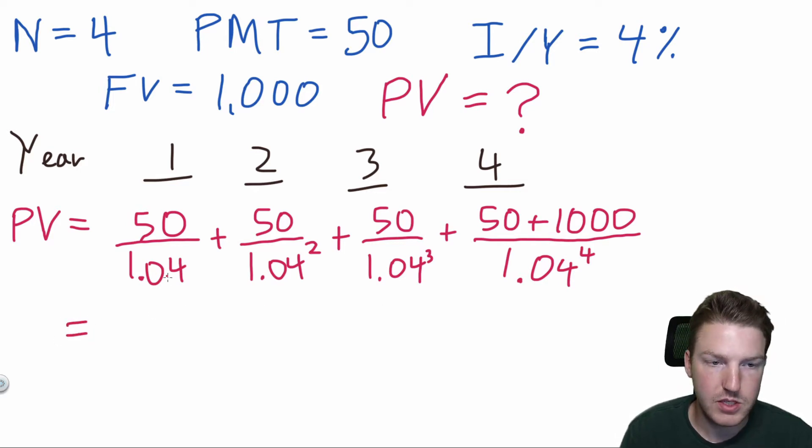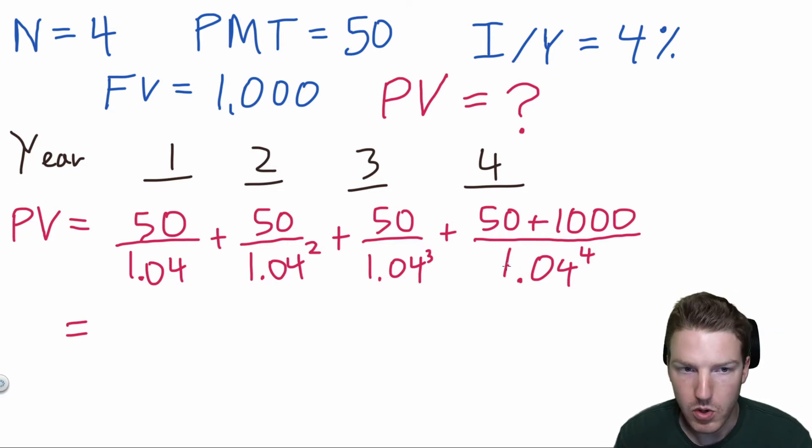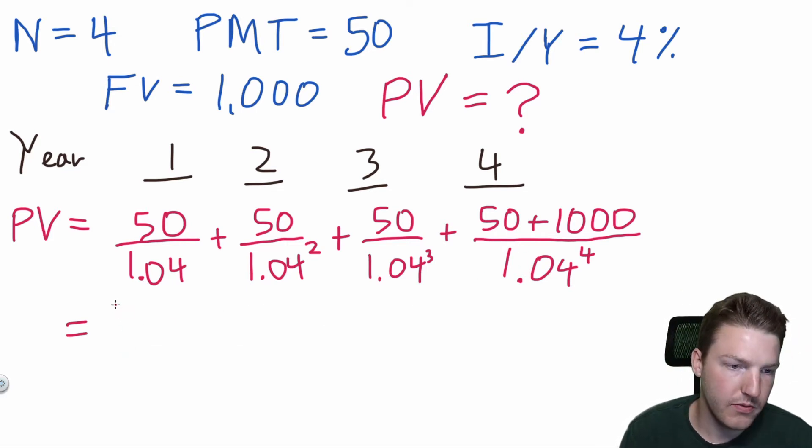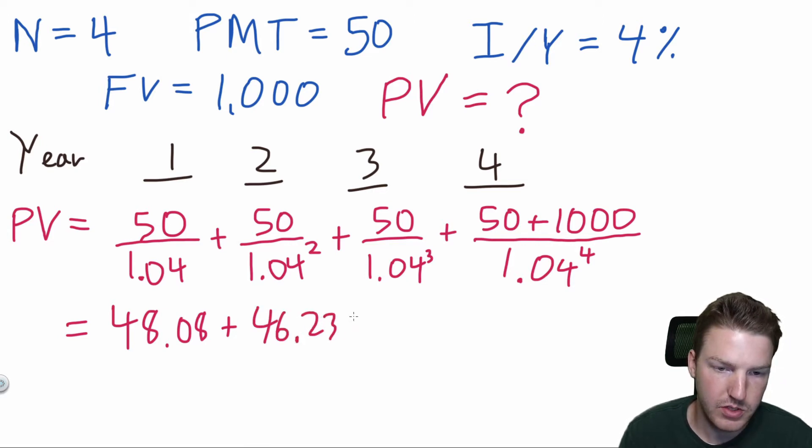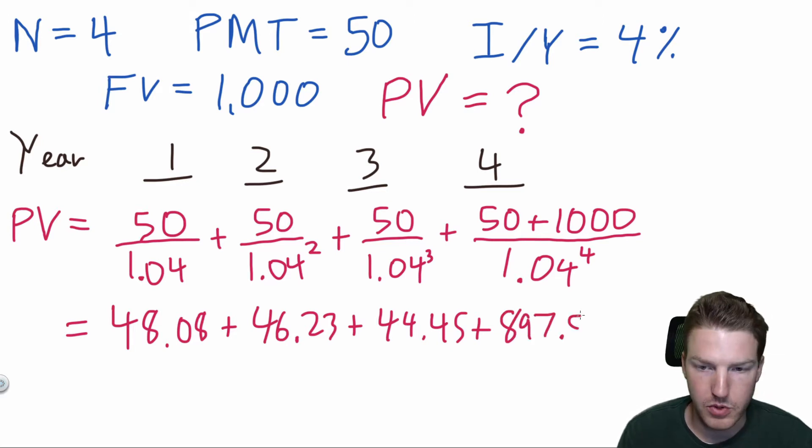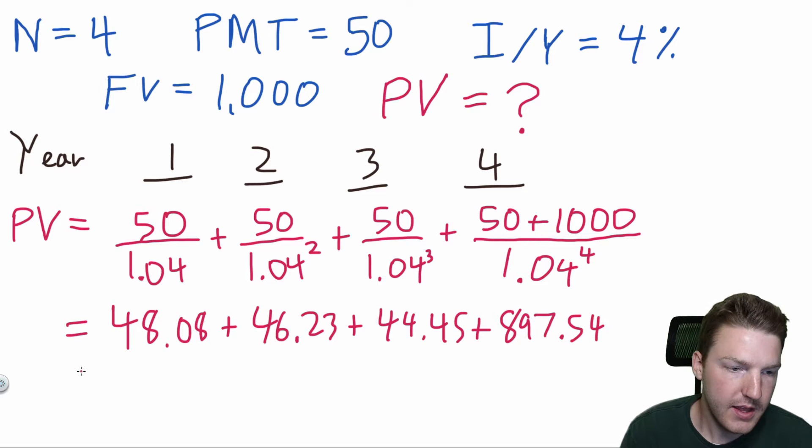And now you can basically calculate these one by one, find out the value of each year, which I'll show you here. So the first year, our present value of that cash flow is actually $48.08. The second year, the value of that cash flow is $46.23. Year three is $44.45. And the final year is where most of the value comes from, which is $897.54. And then that gives us a total present value of $1,036.30.